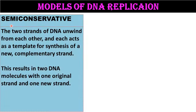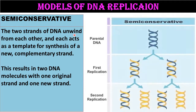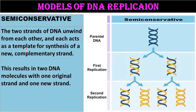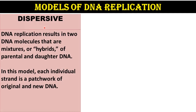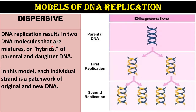In the semi-conservative model, the two strands of DNA unwind from each other and each acts as a template for synthesis of a new complementary strand. This results in two DNA molecules, each with one original strand and one new strand. In the picture, the blue strand indicates the parent DNA strand and the yellow strand indicates the new daughter strand. In the dispersive model, replication results in two DNA molecules that are mixtures or hybrids of parental and daughter DNA, where each individual strand is a patchwork of original and new DNA.